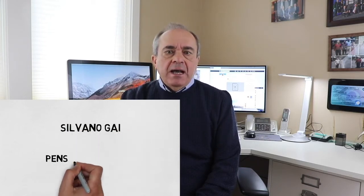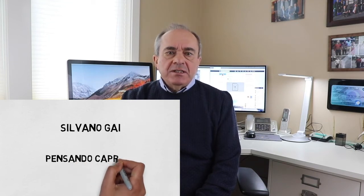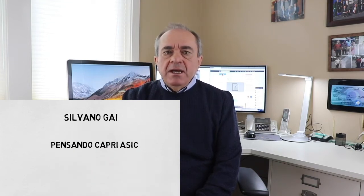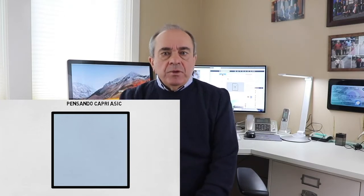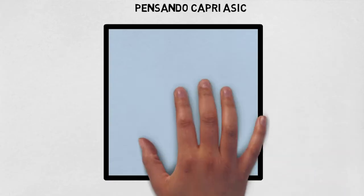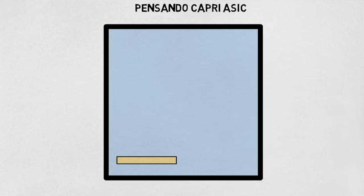Good morning, Silvano here with Pensando System. Today I am here to speak about the Capri ESIC. The Capri ESIC is the first ESIC designed by Pensando System and is currently shipping in its line of distributed service cards. Capri is a beautiful Italian island in front of Naples. This short video will present the block diagram of the Capri ESIC and its main components.